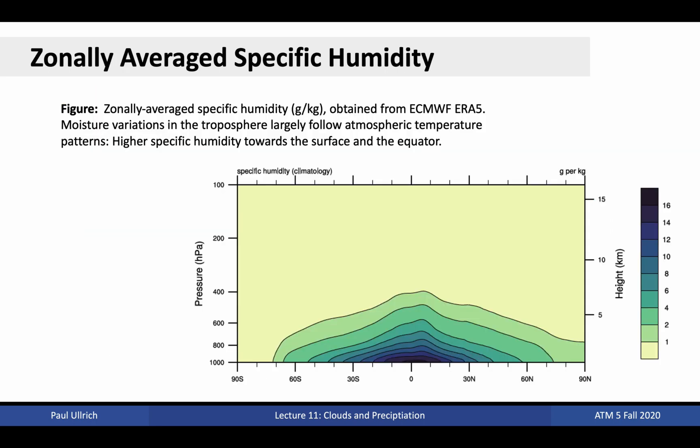Looking at this cross-section of the atmosphere, with latitude along the x-axis and altitude along the y-axis, we again see that water vapor closely follows temperature. At higher latitudes where temperatures are colder, water vapor drops off to nearly zero. Similarly, at higher altitudes away from the equator, there is very little water in the atmosphere. Only in the tropical middle troposphere is water vapor not negligibly low, because convection in this region pushes moisture to higher altitudes.